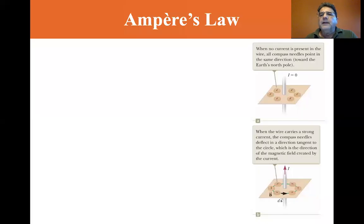Okay, we are now at section 29.3 Ampere's law. Let's look at the PowerPoint and let's look at the diagram here. When no current is present in a wire, all compass needles point in the same direction towards the earth's north pole. They're just regular compasses. If there's no current, then the compasses act normally.